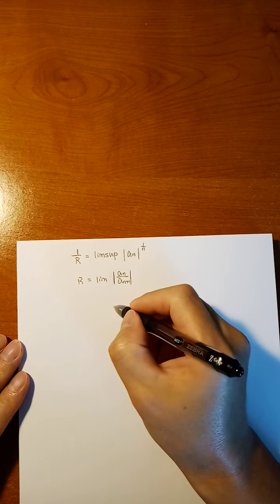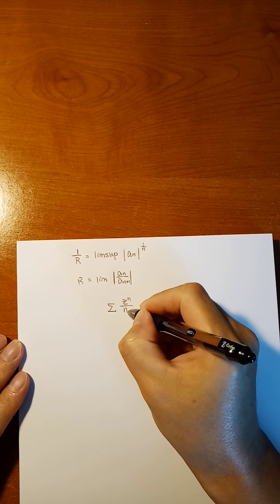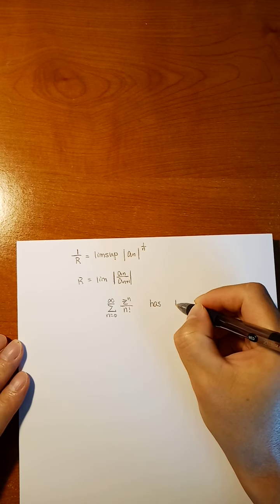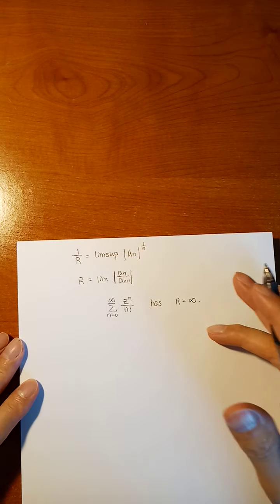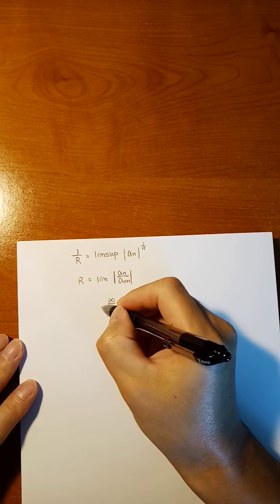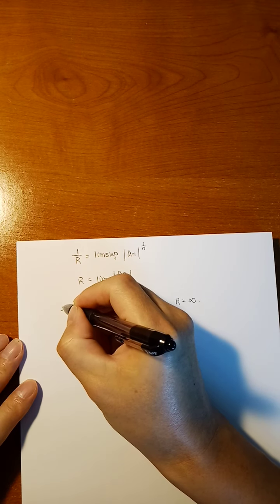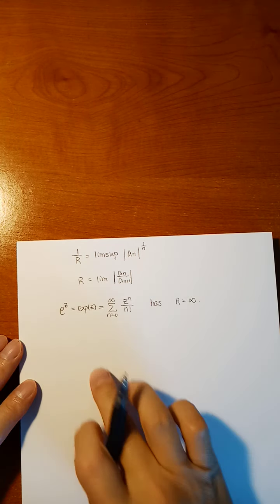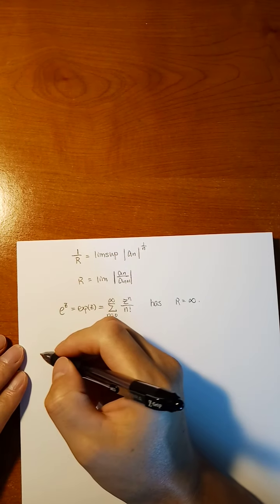With this formula, we know that the series from n=0 to infinity has radius of convergence R equal to infinity, meaning it is convergent at every complex number. We gave it a name: the complex exponential function, written as e^z. That's what we did last time.